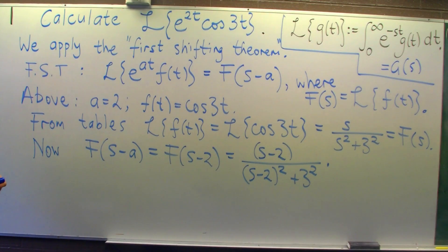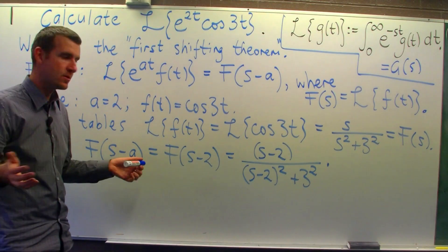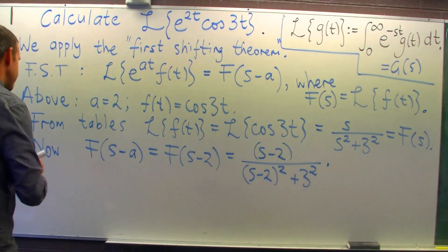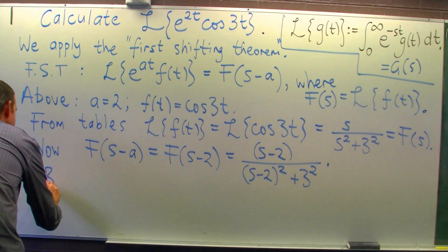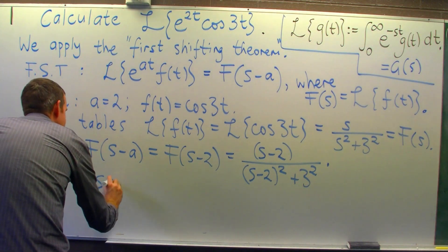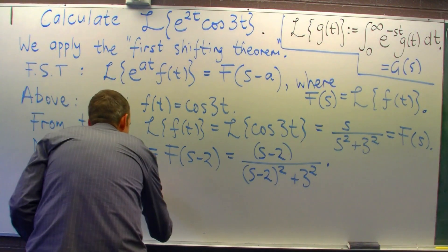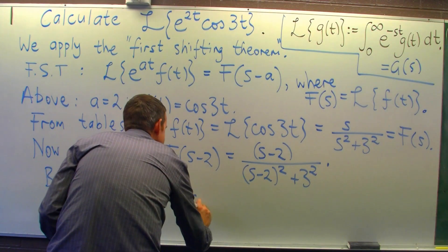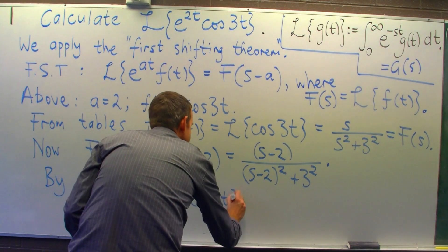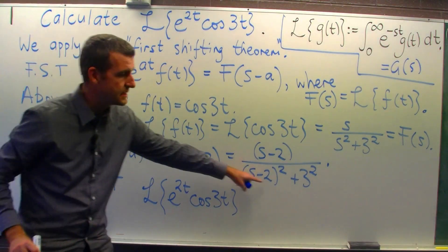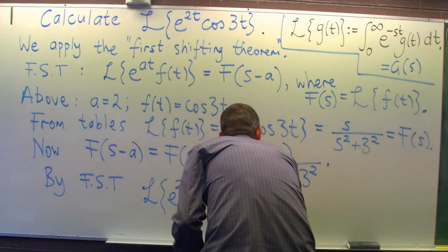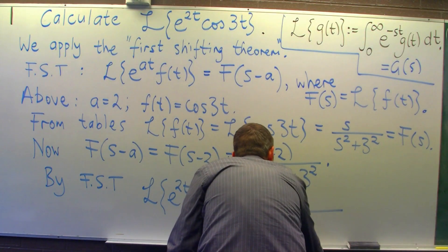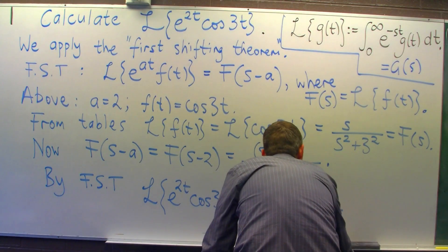Okay, so what's our answer? Well, this is the Laplace transform of this. So by the first shifting theorem, the Laplace transform of e to the 2t cos 3t is this expression here.